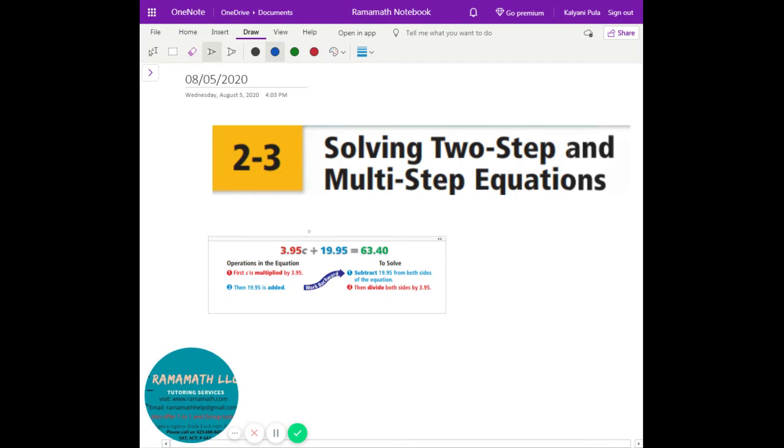So in this one first of all we have this is the letter c. That's the variable is right here. And then we have a constant and also a number here. So first of all what you do is $19.95 is added. That's what you want to take it out. And then you can go to the next step to where the variable is. So we're going to look at a question so we can do step by step and it makes more sense to you.